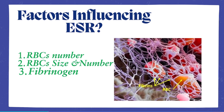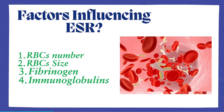Three, plasma proteins. Proteins like fibrinogen promote RBC clumping — rouleaux formation — making them heavier and speeding up sedimentation. Fibrinogen is elevated in inflammatory processes, infections, and malignancies. Similarly, immunoglobulins, especially IgM, increase ESR in conditions like multiple myeloma or Waldenström macroglobulinemia.